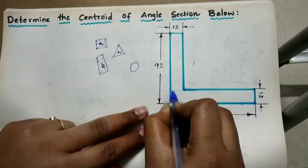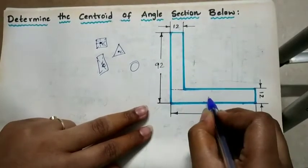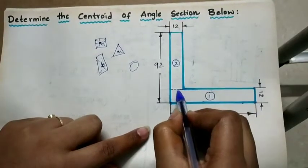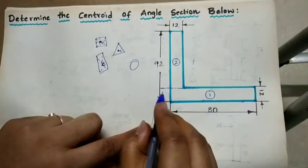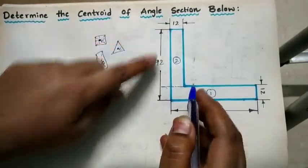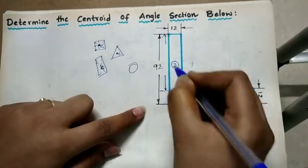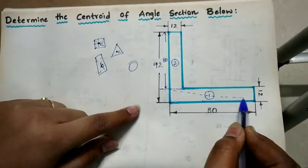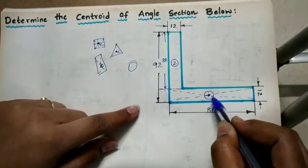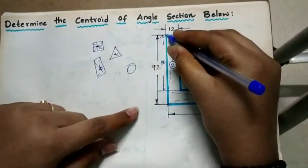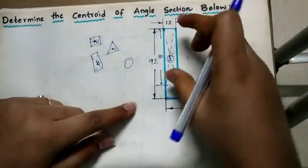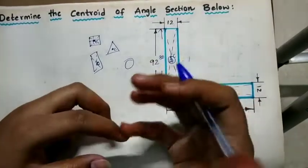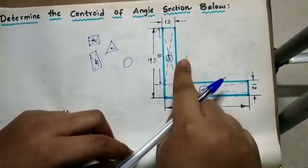We will divide the L-section into two equal definite parts. I will explain each part. The height of the first part is 12 mm; we neglect the remaining height. The remaining height is 80 mm. We choose the geometrical center C for each part. The goal is to find the centroid of this L-section.